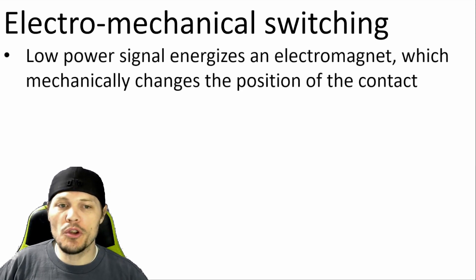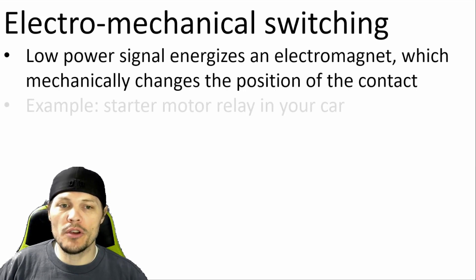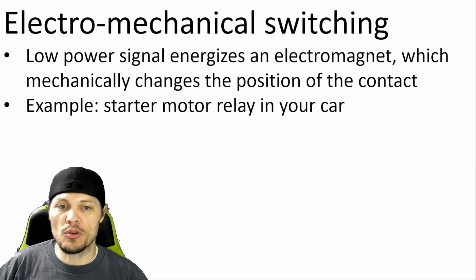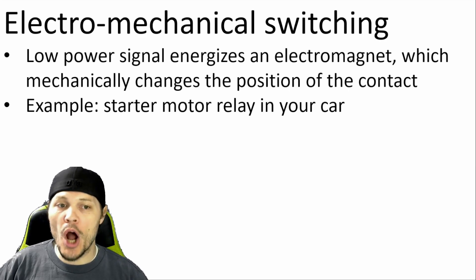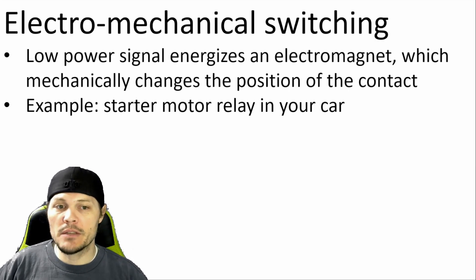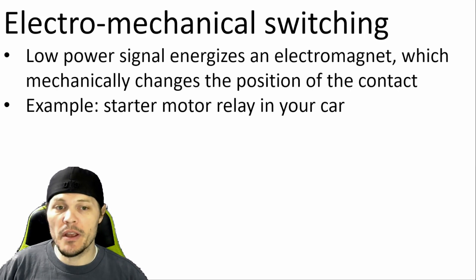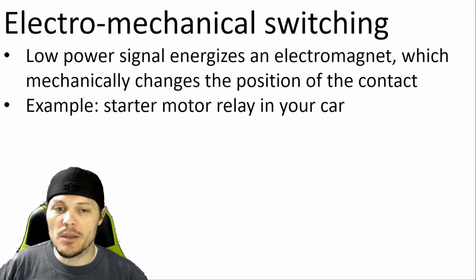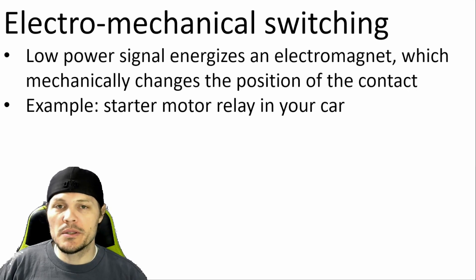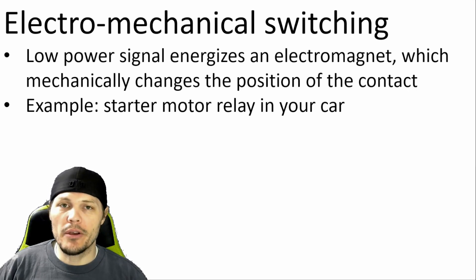For example, when you turn the key to start your car, a low power signal triggers a relay that connects the battery to the starter motor, allowing hundreds of amps of 12-volt power to flow. In the case of an electric vehicle, there's still hundreds of amps, but the voltage system is much higher. In my case, I'm using 72 volts, which means the amount of power is a lot higher.